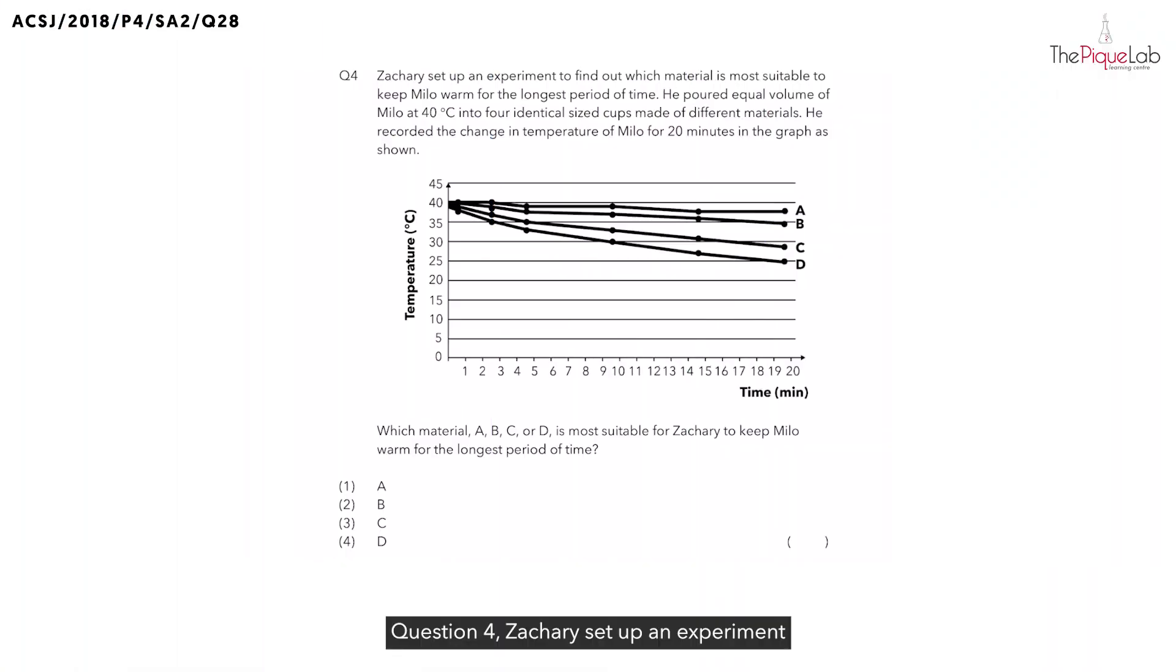Question 4. Zachary set up an experiment to find out which material is the most suitable to keep his Milo warm for the longest period of time. He then poured an equal volume of Milo at 40 degrees Celsius into four identical cups made of different materials. He then recorded the change in the temperature of the Milo for 20 minutes in the graph as shown below.